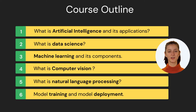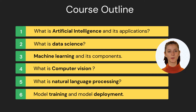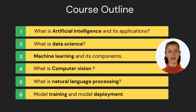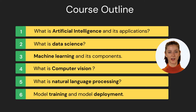Let's go over the course outline. First, we will understand what is AI and its applications in the modern-day world. Then we will understand what is data science. In the next section, we will go over what is machine learning and its subcomponents like supervised learning, unsupervised learning, and reinforcement learning. Then we will understand computer vision and natural language processing. In the final section, we will understand the concepts of training an AI model and deploying it.